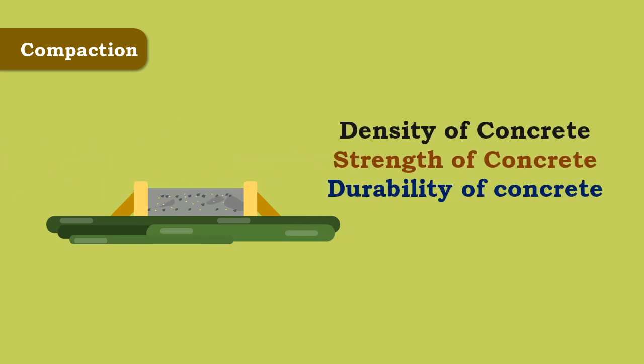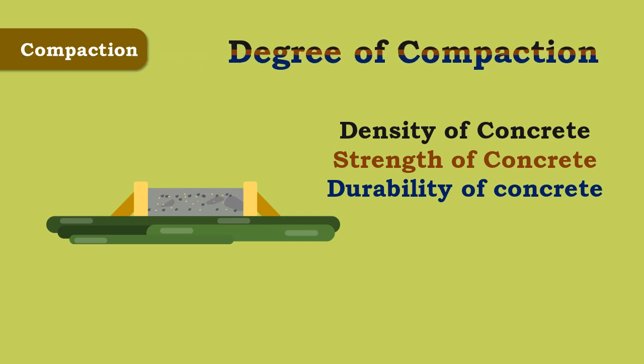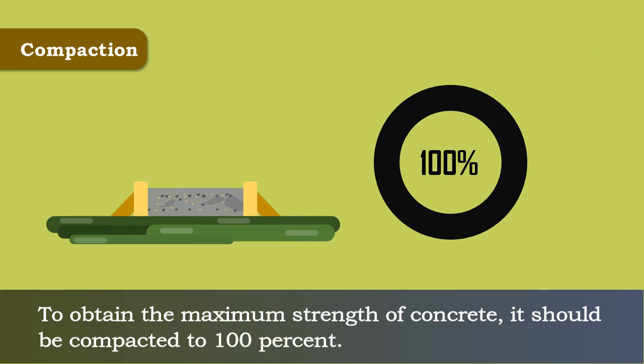Thus, it can be stated that the density, strength and durability of concrete largely depend upon the degree of compaction. To obtain the maximum strength of concrete, it should be compacted to 100%.